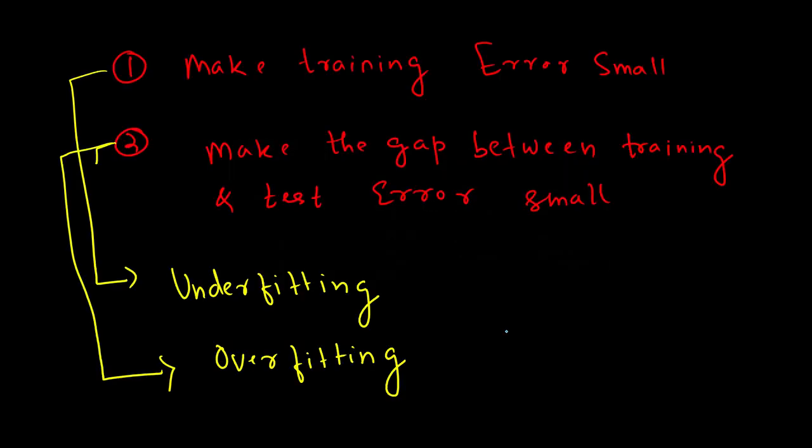While building machine learning models, there are basically two objectives. The first one is to make the training error small, so we build the model on training data and we need to ensure that we make the training error as small as we possibly can.